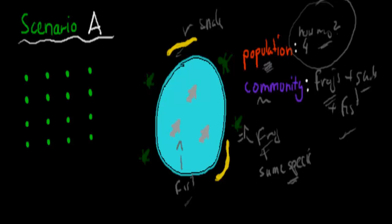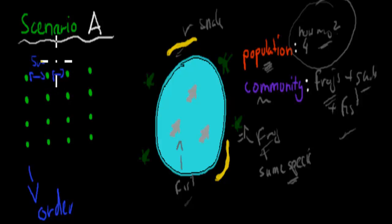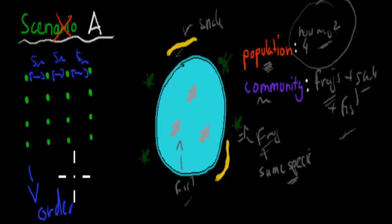Now, what kind of distribution do we usually find when we look for living things? Is it scenario A, B, or C? Scenario A is a very ordered distribution — we find one frog here, then five meters apart the next frog, then five meters apart the next, and so on. This is not the most common way; it's unusual to find things so ordered.